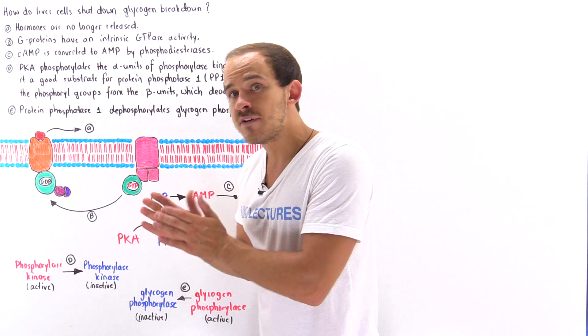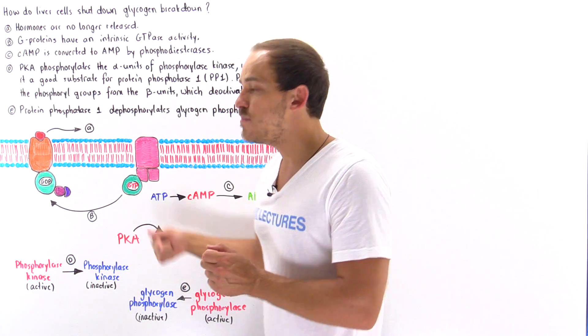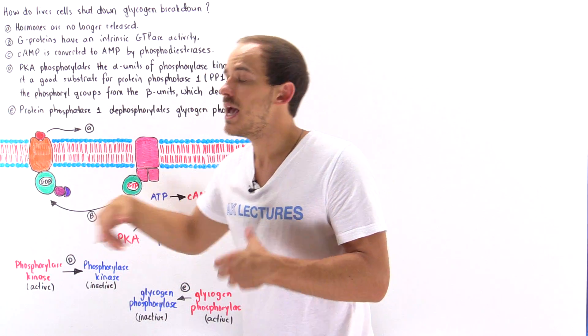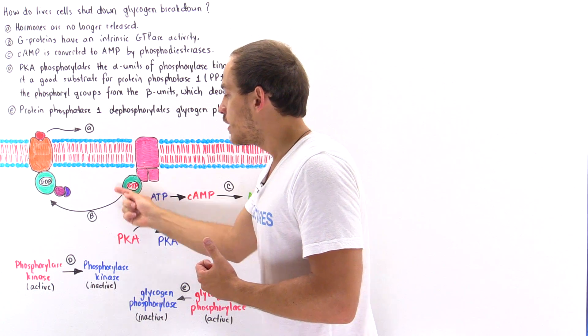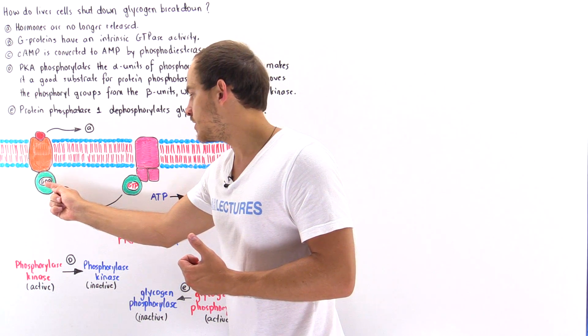The G protein itself has the ability to hydrolyze the GTP back into GDP, and what that does is it turns off the G protein and the G protein returns back to this location here.